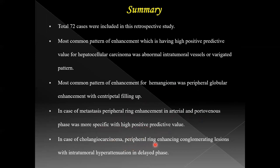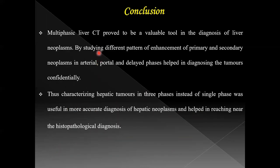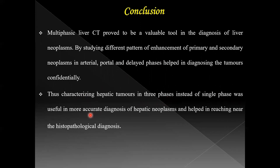In cholangiocarcinoma, peripheral ring enhancement with conglomerated lesions and intratumoral hyper-attenuation in the delayed phase — i.e., delayed enhancement — was characteristic. In conclusion, multiphasic liver CT proved to be a valuable tool in the diagnosis of liver neoplasms by studying different patterns of enhancement of primary and secondary neoplasms in arterial, portal, and delayed phases, helping to diagnose tumors confidently. Characterizing hepatic tumors in three phases instead of a single phase was useful for more accurate diagnosis and helped in reaching a near histopathological diagnosis.